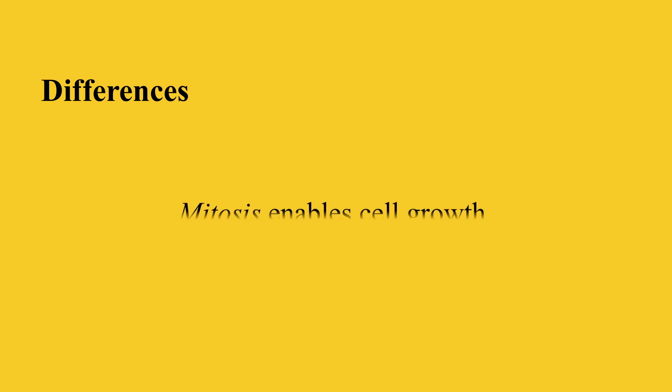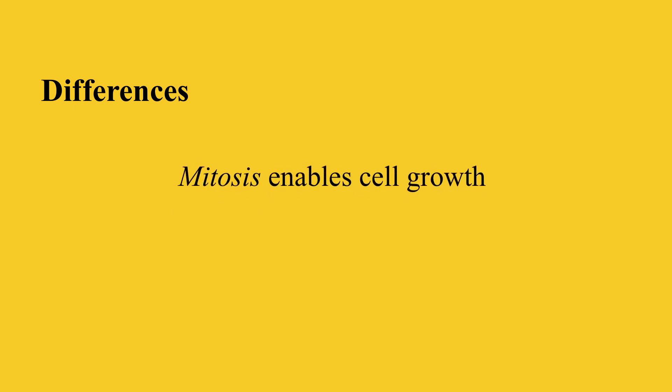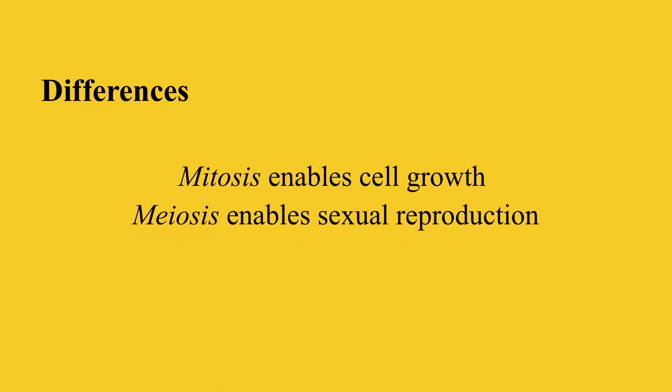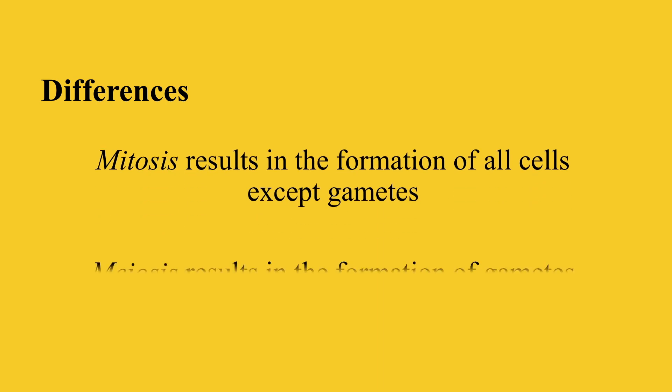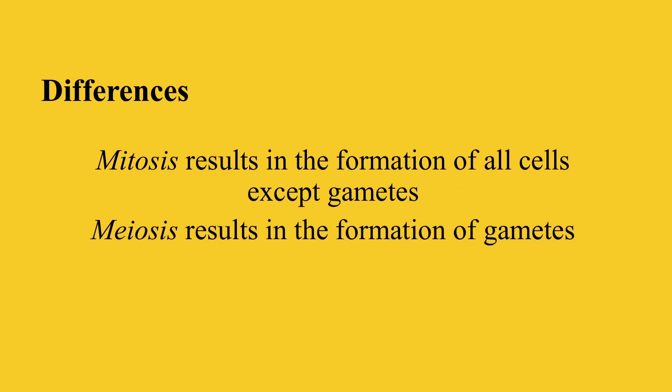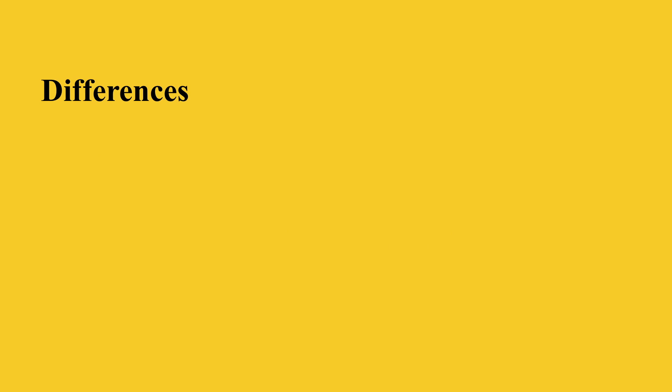Mitosis enables cell growth while meiosis enables sexual reproduction. Therefore, mitosis creates all cell types except gametes. Gametes are a type of cell as well — they are involved in sexual reproduction and therefore are only produced by meiosis.